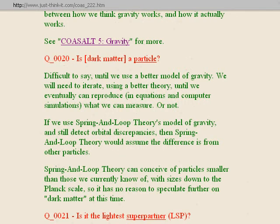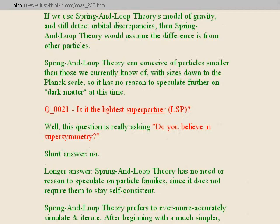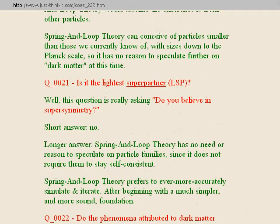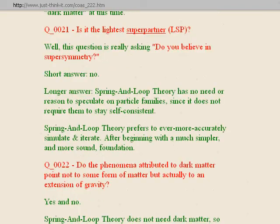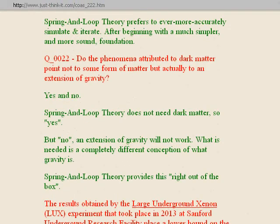Question twenty-one: is dark matter the lightest superpartner? This question is really asking, do you believe in supersymmetry? Spring-in-Loop Theory does not. It has no need or reason to speculate on particle families since it does not require them to stay self-consistent. The superpartners and supersymmetry are kind of absurd — that's where physics just gets too theoretical. Question twenty-two: do the phenomena attributed to dark matter point to an extension of gravity? Yes and no. Spring-in-Loop Theory does not need dark matter — so yes, they point to something else. But no, an extension of gravity will not work. What is needed is a completely different conception of what gravity is. Spring-in-Loop Theory provides this right out of the box.